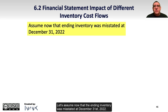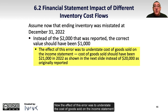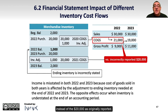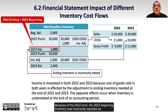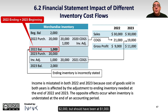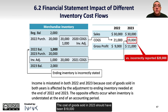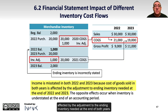Now assume that the ending inventory was misstated at December 31st, 2022. Instead of the $2,000 that was reported, the correct value should have been $1,000. The effect of this error was to understate the cost of goods sold on the income statement — cost of goods sold should have been $21,000 in 2022, instead of the $20,000 as originally reported. Because of the 2022 error, the 2023 beginning inventory was incorrectly reported as $2,000 but should have been $1,000. This causes the 2023 gross profit to be understated by $1,000, since the cost of goods sold in 2023 should have been $19,000 but was originally reported as $20,000. Income is misstated in both 2022 and 2023 because the cost of goods sold in both years is affected by the adjustment to the ending inventory needed at the end of both years.